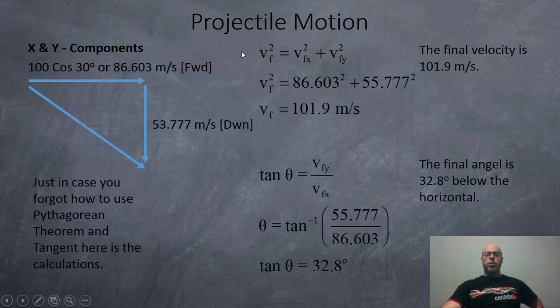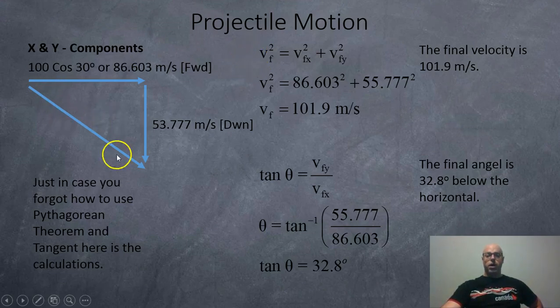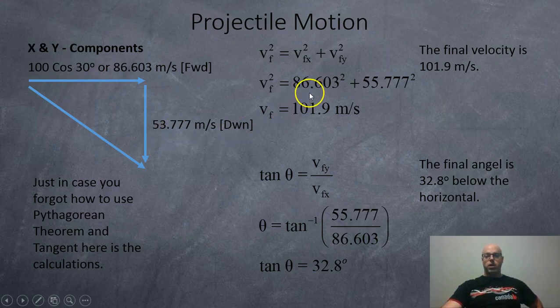If you want to see how the Pythagorean theorem was used to find the hypotenuse, we've got the adjacent 86.603, and we got the opposite coming down at 53.777. So we just use Pythagorean theorem and we get 101.9. To find the angle, it's opposite over adjacent. So the opposite is 53.777, the adjacent is 86.603. And so when we shift tan that, we get 32.8 degrees.